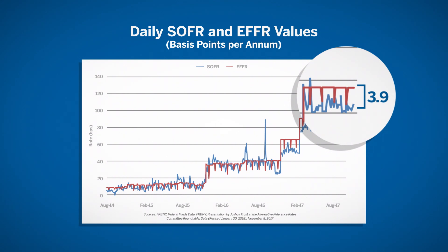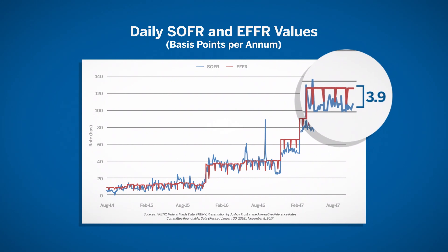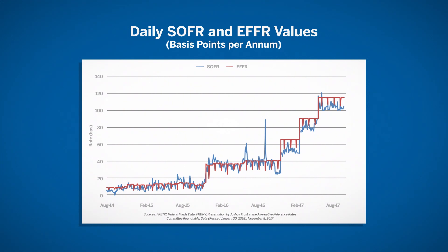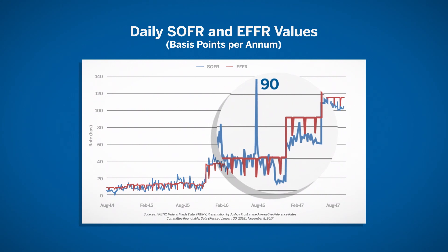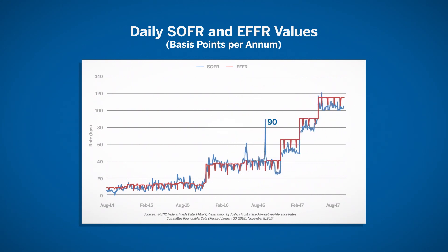However, daily SOFR is more volatile than daily EFFR, particularly around quarter-end dates. A conspicuous example is the last week of September 2016, when SOFR doubled from about 45 to 90 basis points. The increased volatility relative to EFFR is generally attributable to banks' balance sheet adjustments at quarter-end, which leads them to be temporarily less active in the Treasury repo markets that underpin SOFR.